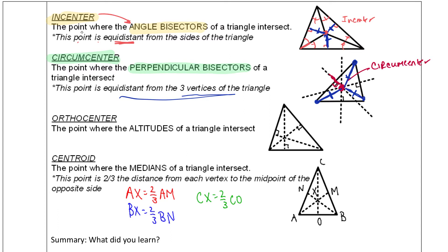The next one is called the orthocenter. This is where the altitudes intersect, and the orthocenter can be on the outside. Can the incenter ever be on the outside? No, because it's bisecting angles, so it'll always be on the inside. Can the circumcenter ever be on the outside? Well, if I drew an obtuse triangle and drew the perpendicular bisectors, they will intersect outside — so yes, this can be on the outside. The orthocenter is the same — yes, it can be on the outside — and there's nothing special about the orthocenter's equidistance.